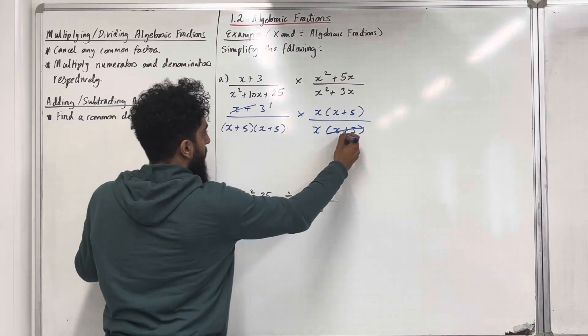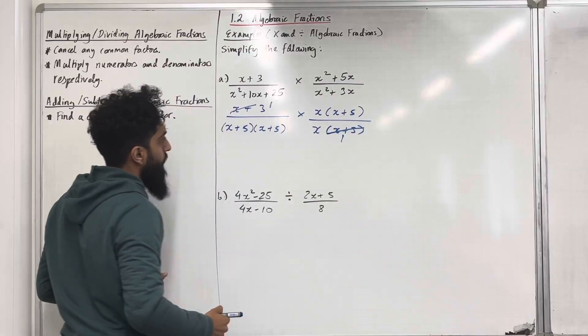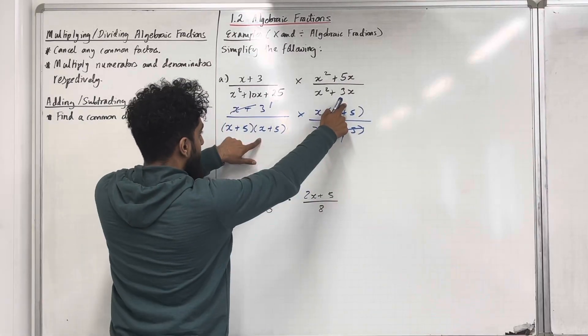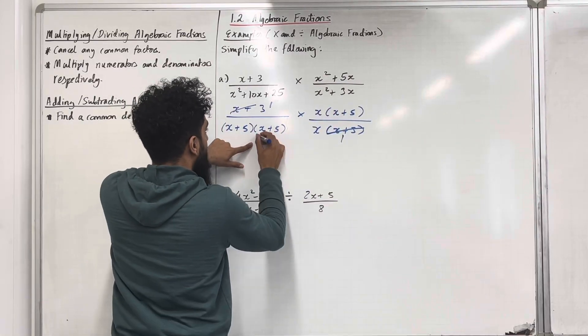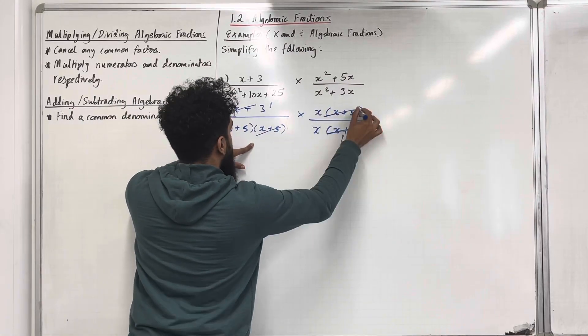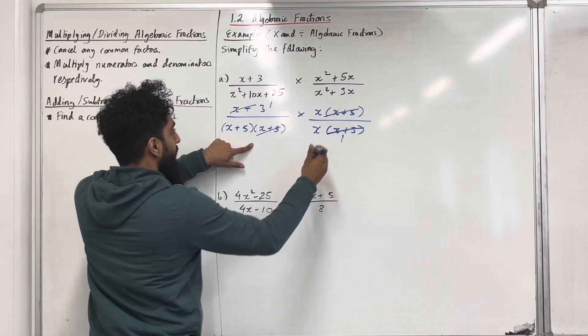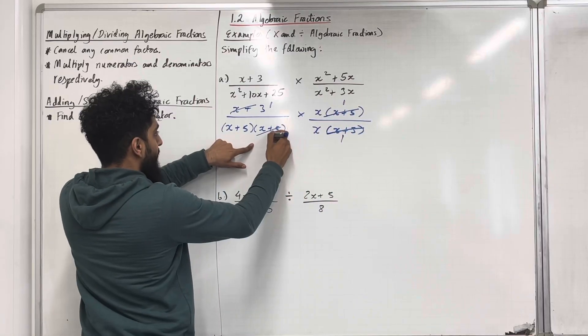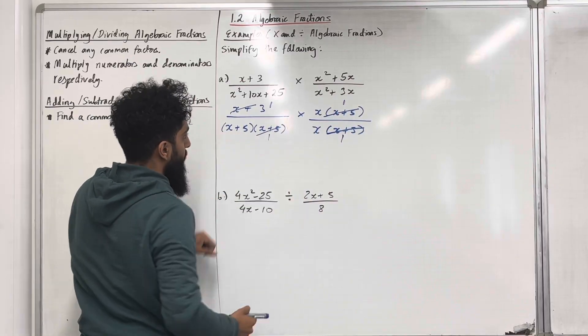So I can cancel out these two x plus 3s — put a 1 there and a 1 there. I've got an x plus 5 here and an x plus 5 here, so I can cancel out these x plus 5s as well — stick in a 1 here and a 1 here.